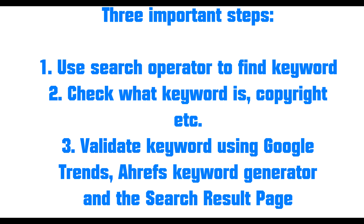First of all, there's using the search operator method to find a keyword. Then you need to check what the keyword is and check its copyright. Then finally you have to validate the keyword using Google Trends, Ahrefs Keyword Generator, and the SERP — the search engine result page — and I'm going to show you how to do that very quickly and easily in under three minutes today.